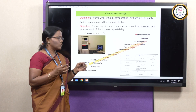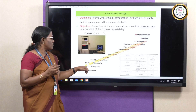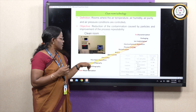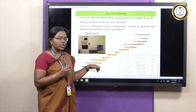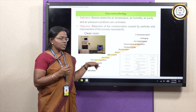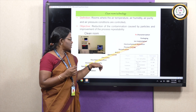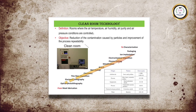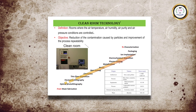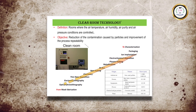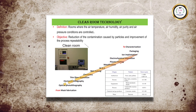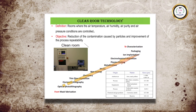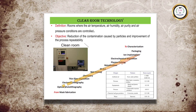There is a series of steps from mask fabrication up to characterization. This includes optical photolithography, electron lithography, thin film deposition, etching, metallization, electrochemical deposition, ion implantation, packaging, and then characterization.